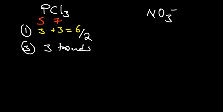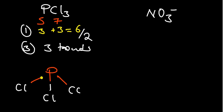With three chlorine atoms, each takes a single bond. Phosphorus is our central atom with three chlorine atoms around it — drawn slanted. Phosphorus has five electrons in its outer shell; it has donated one electron per bond, so it remains with two as a lone pair on top.